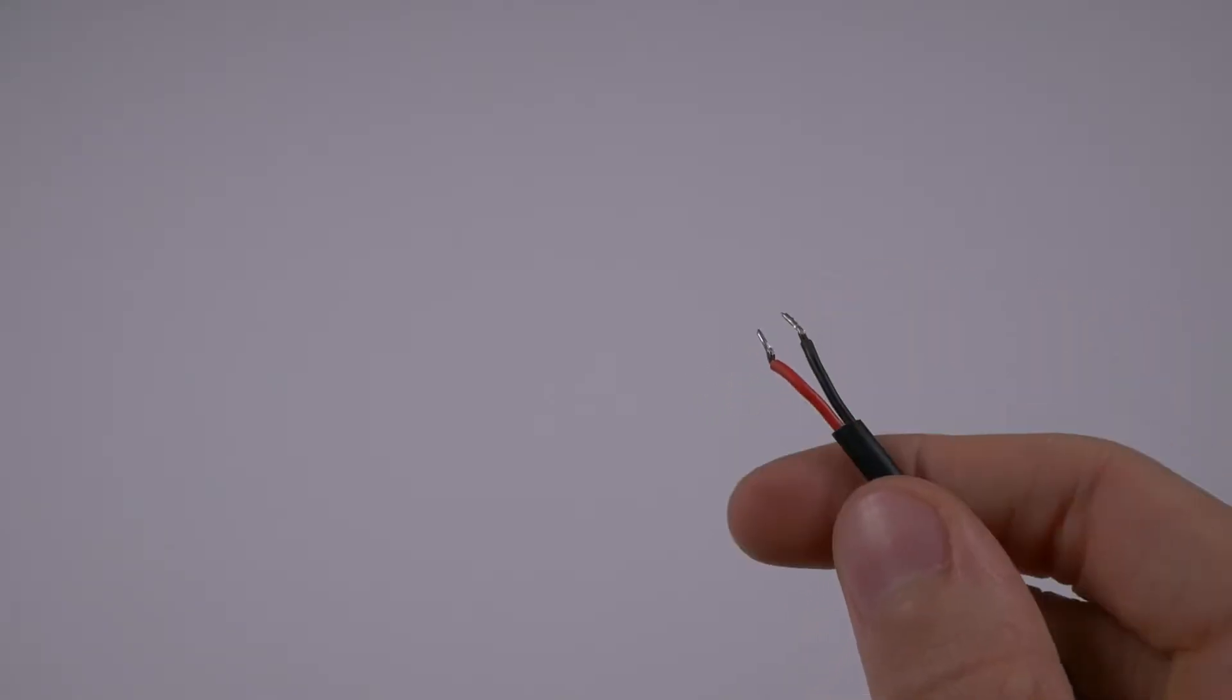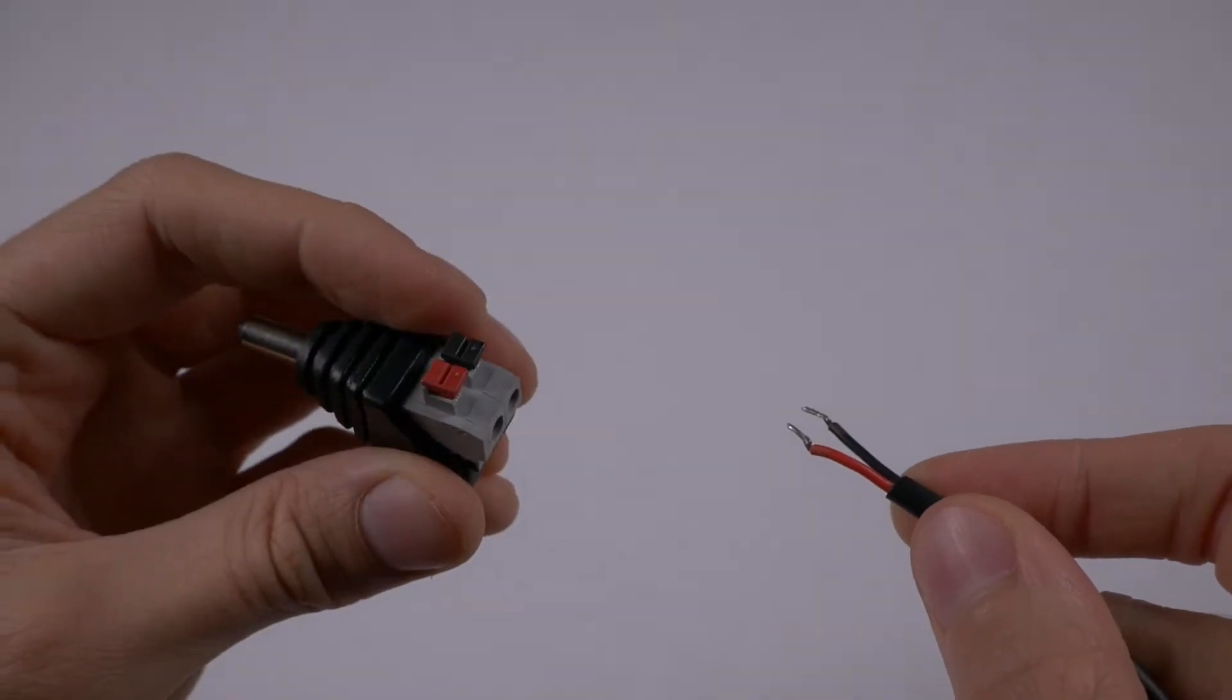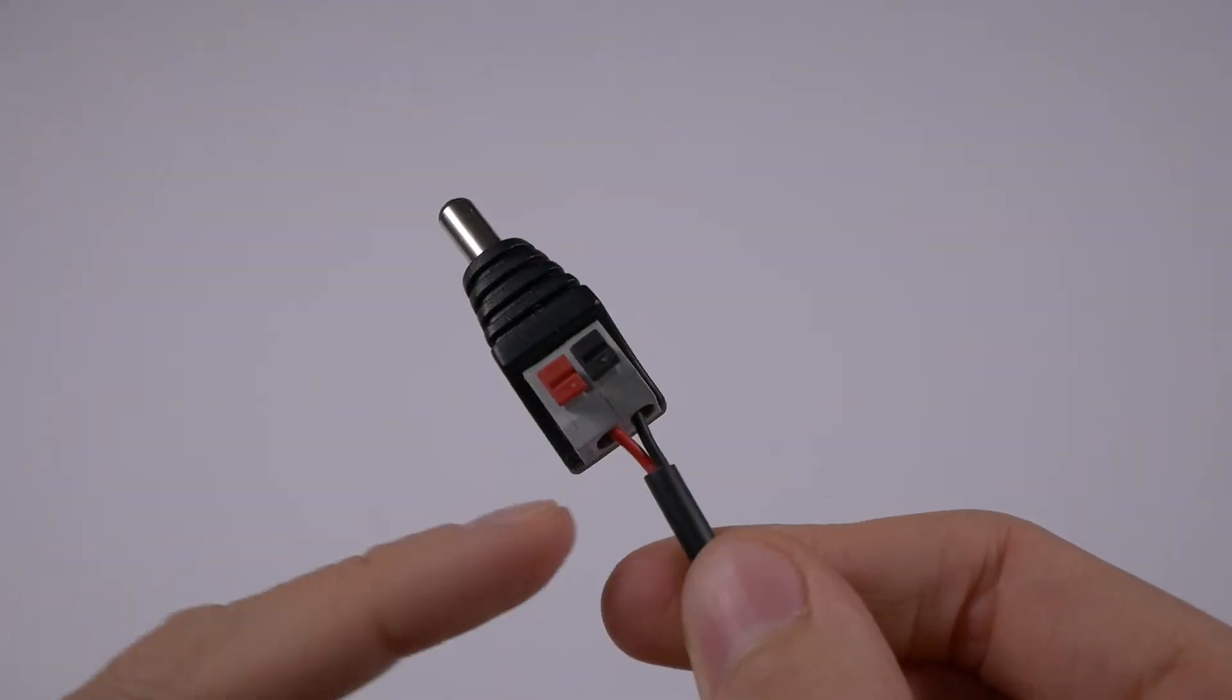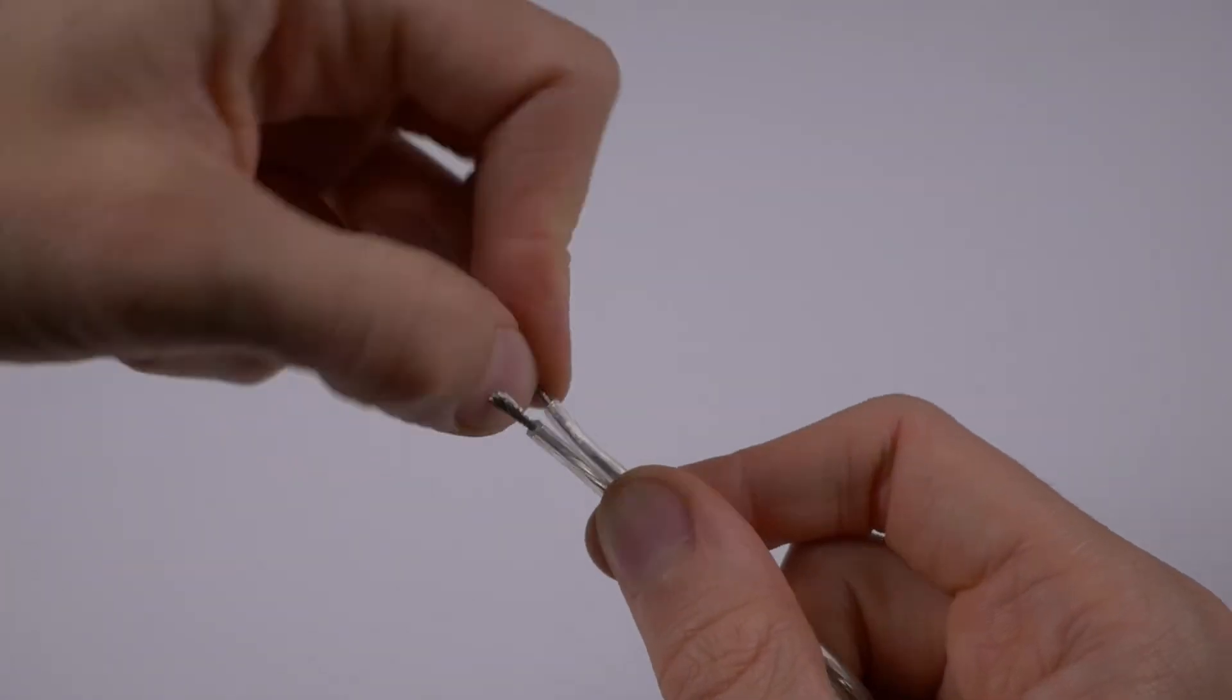The negative DC wire will usually be black, but might be ribbed or striped. The other wire will be the positive. Press the two pins of the barrel connector and insert the wires into the holes, red to red, black to black. For stranded wire, you should twist the ends before inserting.